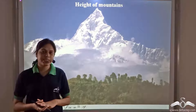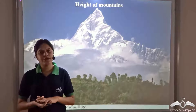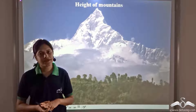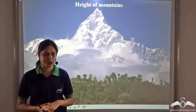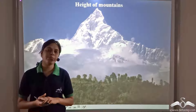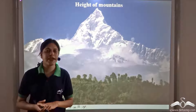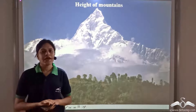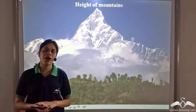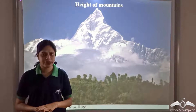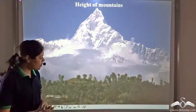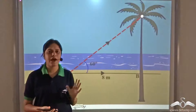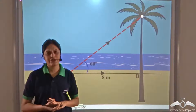We have already seen how trigonometry can be used to find heights or distances which would otherwise be very difficult to measure. In fact, a very important application of trigonometry is that it can be used to measure the height of mountains. We have found the height of several objects like trees, poles, and towers using the trigonometric ratios.